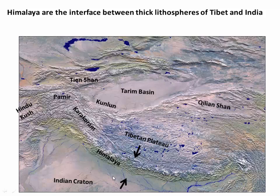In the subsequent slides, we're going to be mostly visualizing this in a two-dimensional cross-section going north to south right through the central Himalaya, and we'll be looking at the structural architecture along this cross-section.